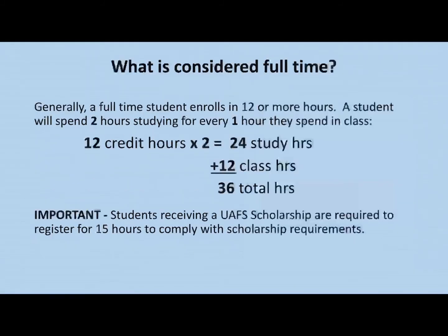What is considered full time? Generally, students enroll in 12 to 15 credit hours. A student will spend two hours studying for every one hour they spend in class. If you take 12 credit hours and spend two hours studying for each class hour each week, that is 24 study hours plus 12 class hours — a total of 36 hours per week focused on your coursework.